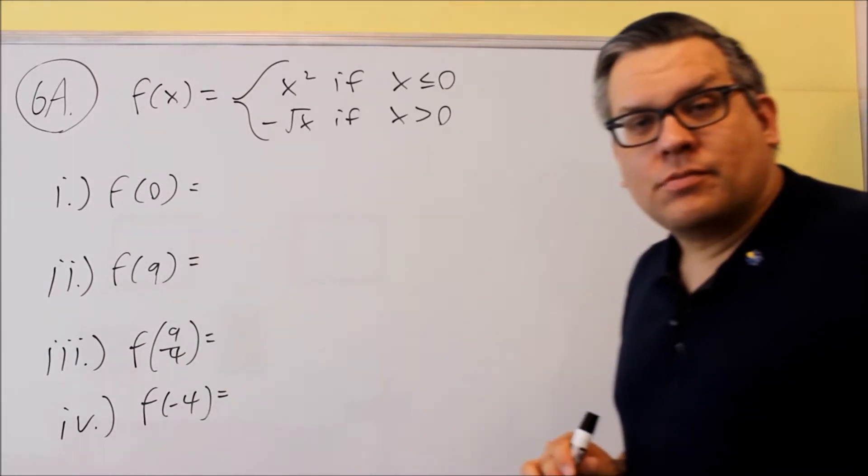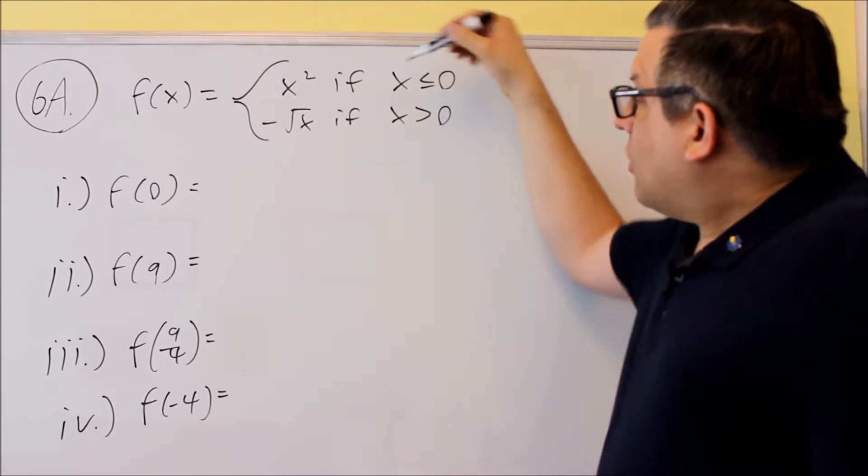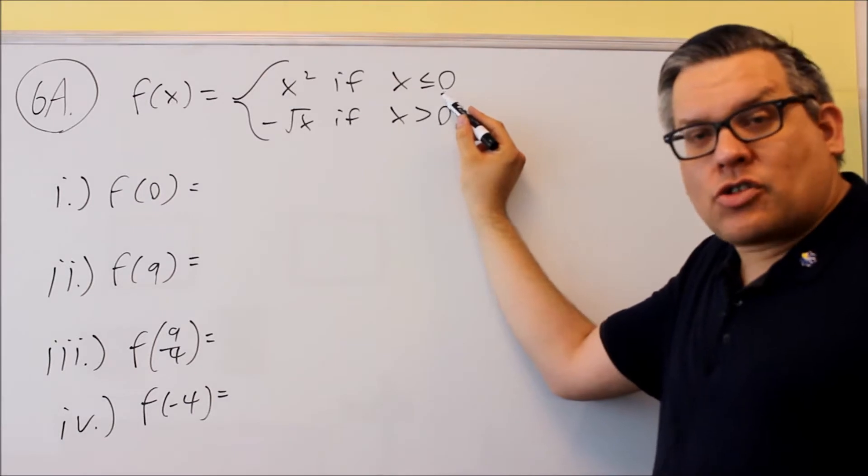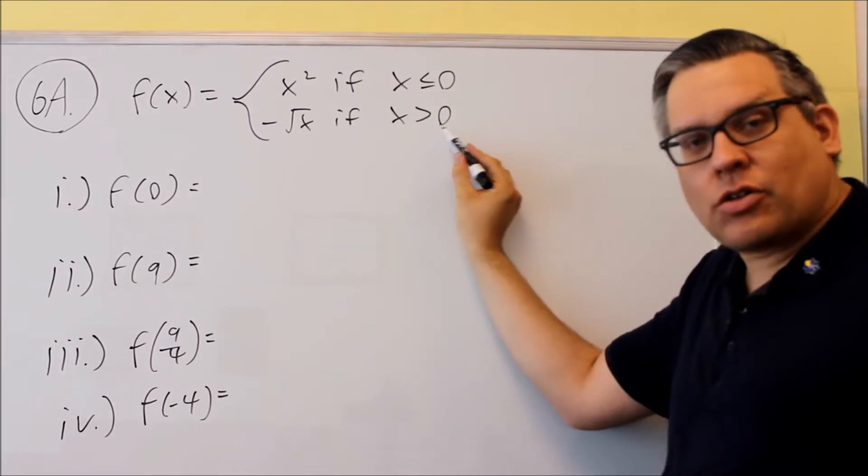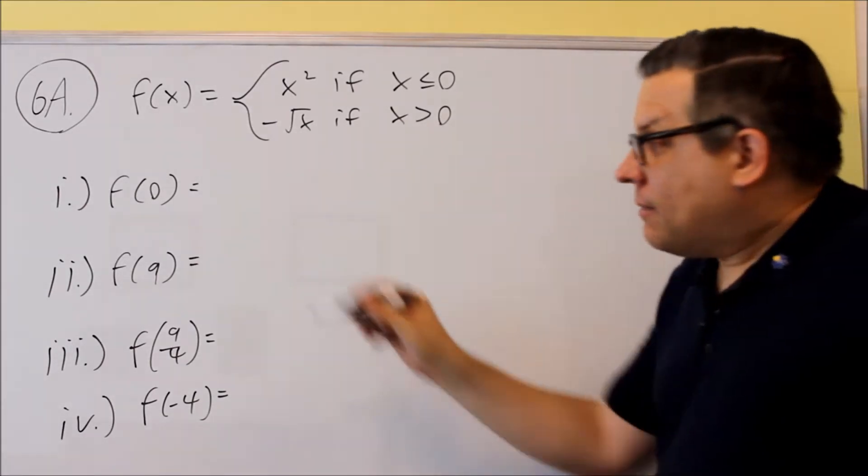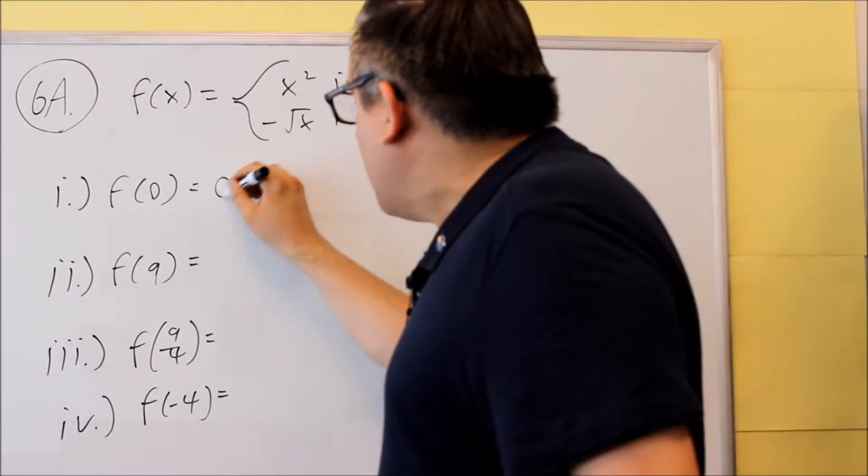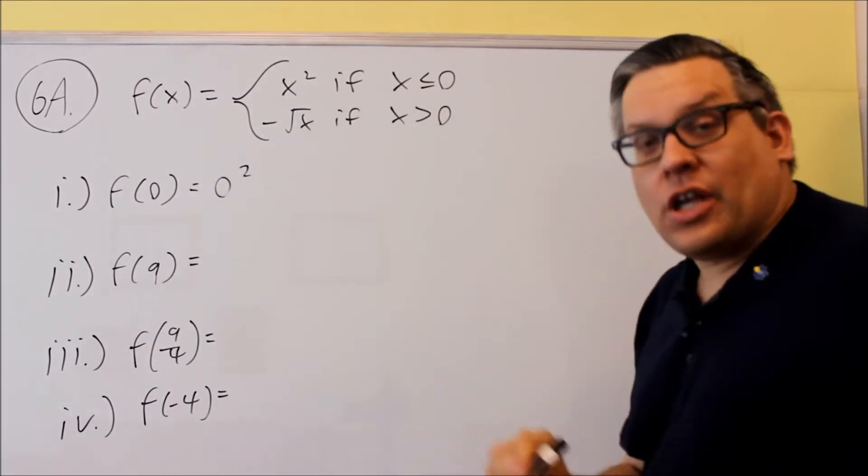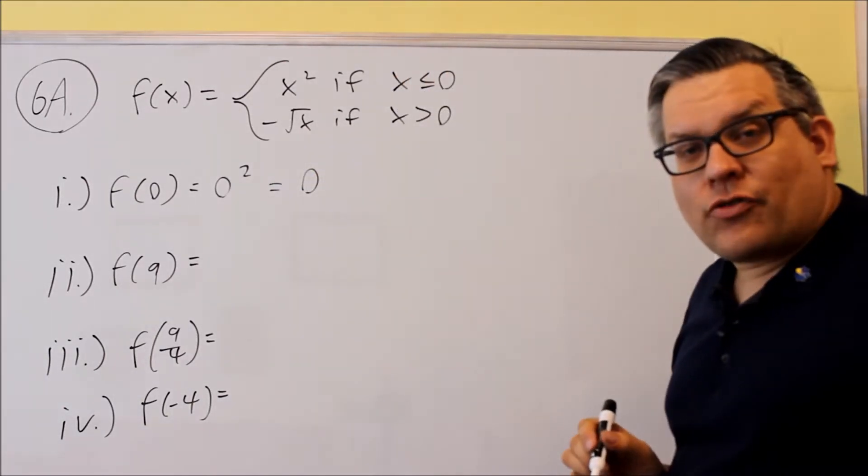So we want to do f of zero. For f of zero, you put a zero in there for the first one only. Notice that zero is only included with that conditional statement for the very first one. So I don't want to put it in the bottom one, it's not included here. There's only going to be one equation that each x value belongs to. So f of zero means we're going to use the first one. We're going to put it into the x squared equation. So we actually plug the number into that and evaluate. So I have zero squared, which is zero, and that's the answer for i.